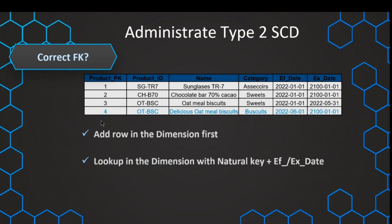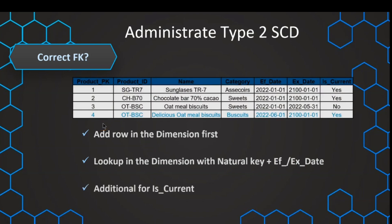We just need to make a quick lookup after the row has been added in the dimension, and then we can use the correct foreign key in our fact table. One additional thing we can do to make filtering a little bit easier is to add a column that is just a flag indicating whether this is the current value or not. This is an additional filtering option suggested by Kimball, and it is just a little bit easier for business users who want to see just the current values.